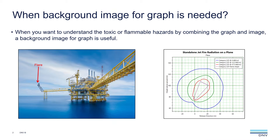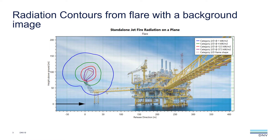When you read the graphs generated by PHAST, sometimes you may want to superimpose the graphs on a background image to understand the results. For example, there is a flare on an offshore installation and we want to understand the radiation hazard to the workers. We can create a jet fire to model the flare and generate radiation contours. If we can superimpose the radiation contours on the image, it will be very straightforward to know the radiation hazard — something like this, which combines the graphs and the image. This can be done easily in PHAST.